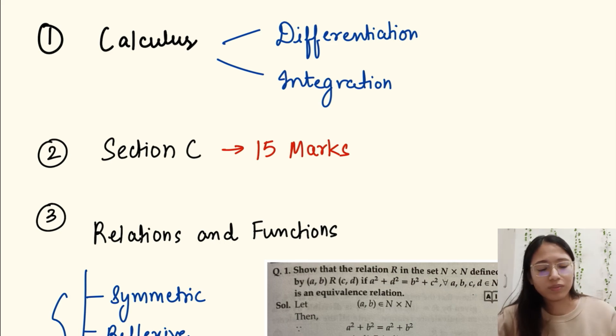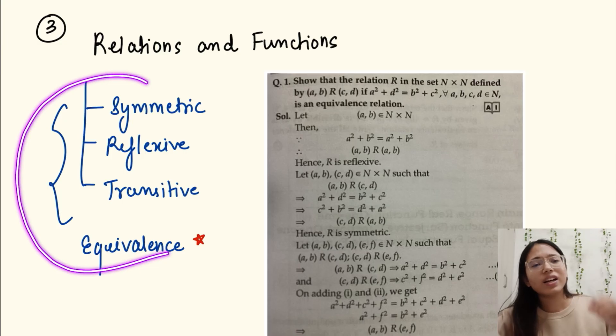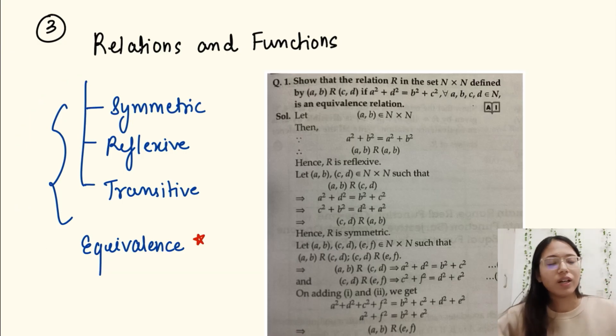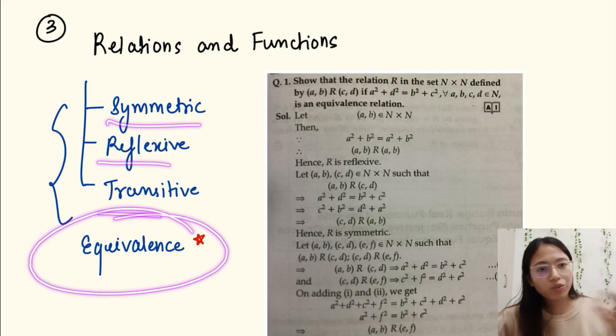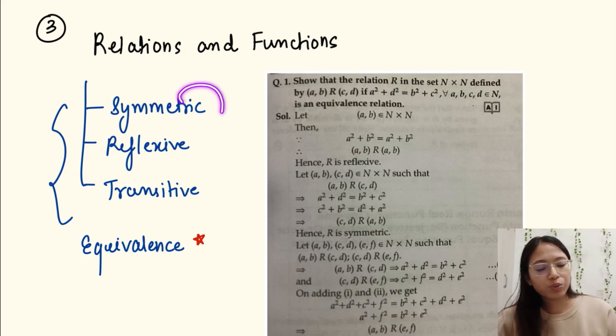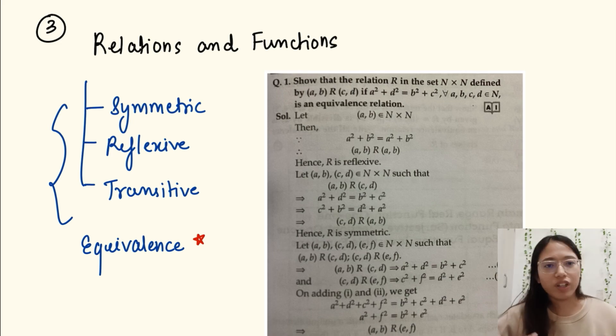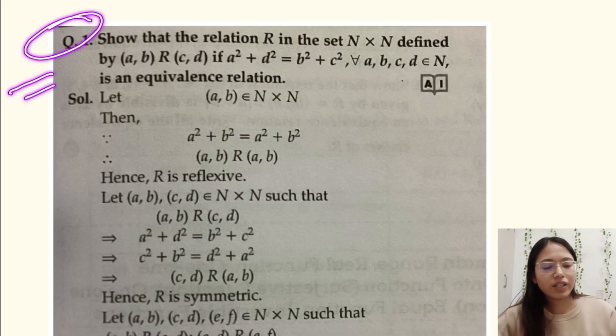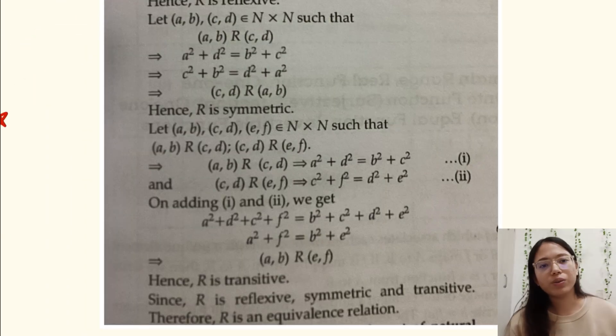Next is relations and functions. Again, repeated questions are asked in your boards: symmetric, reflexive, transitive, equivalence relation. Prove that it is an equivalence relation. You have to prove all these statements. This is a repeated PYQ. If you check out the previous year questions you will come to know that these questions are asked every year. Only the statement varies. They have asked you to prove this equivalence relation. This is the structure that you have to follow.